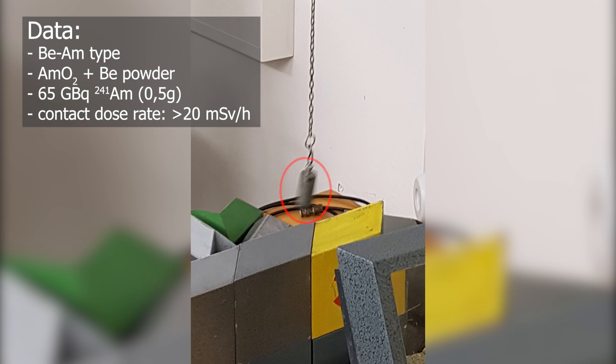It's an americium beryllium source. Inside the capsule is likely a mixture of americium-241 oxide and beryllium in powder form. Today it contains roughly 65 gigabecquerels of americium-241, which is about half a gram. Basically, you need a very active alpha emitter and beryllium.